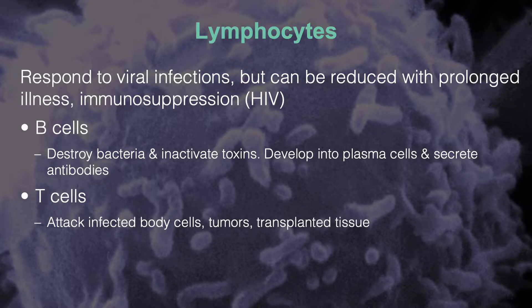A second flavor are T cells. T cells mature in an organ called the thymus. The letter in the names of these cells indicates the tissue from which they mature. T cells specifically engulf or attack invading bacteria — they don't release antibodies; they do the dirty work themselves. These cells will attack the invading bacteria or damaged cells.